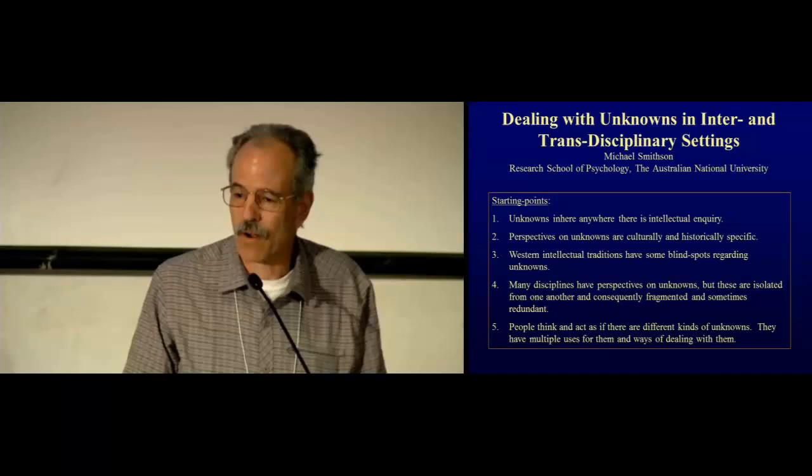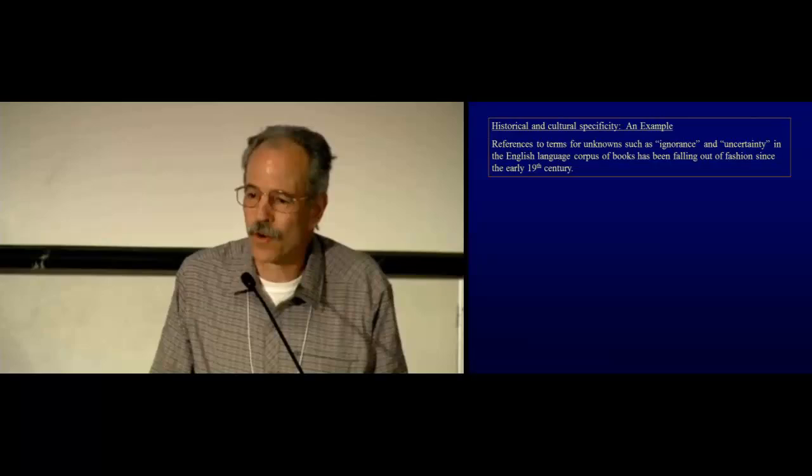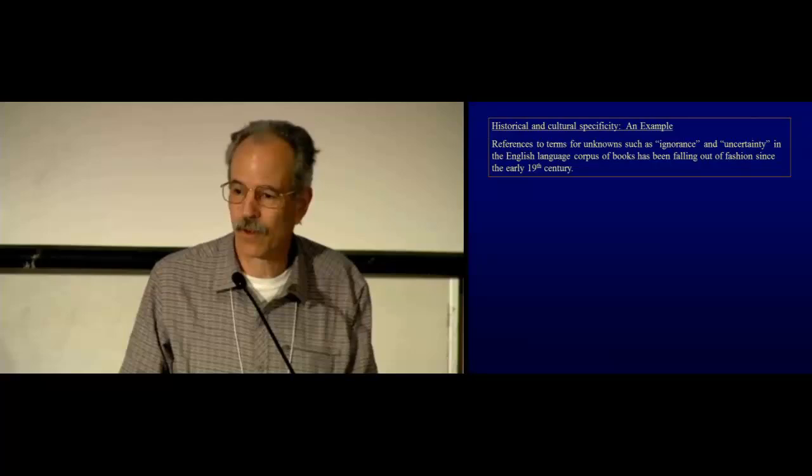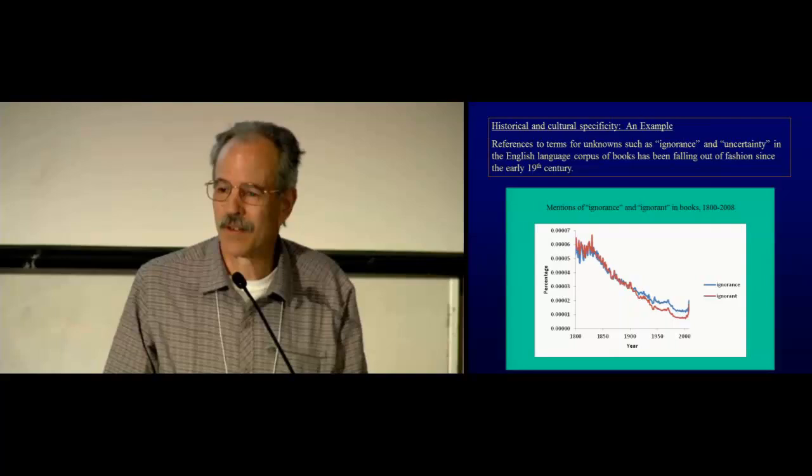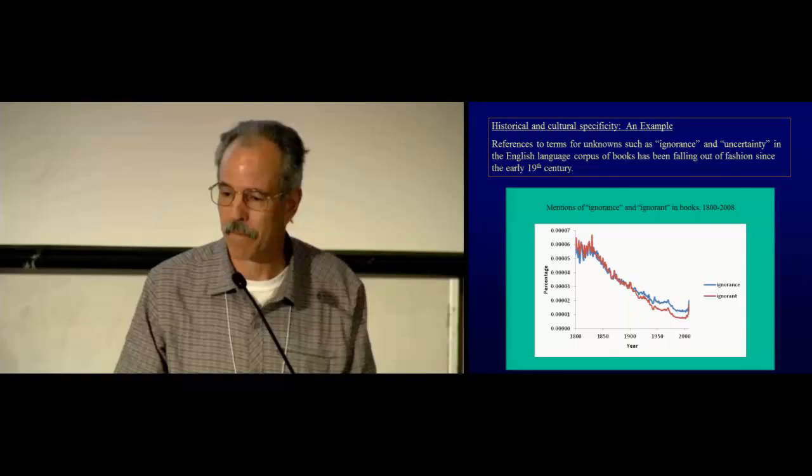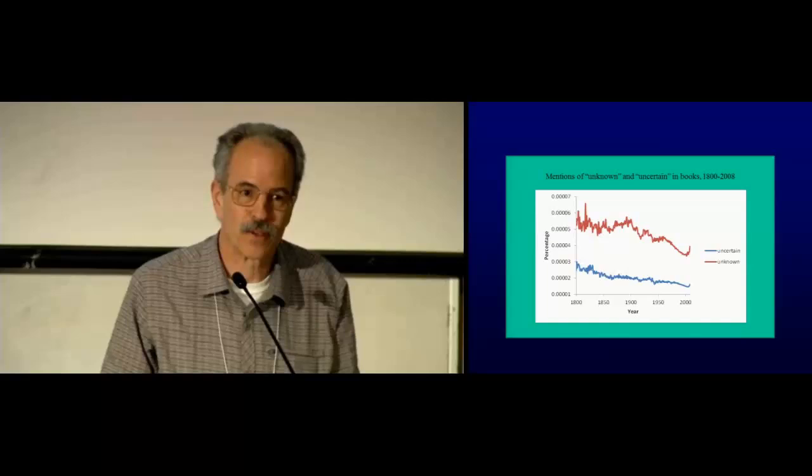Okay, so let's unpack these points a bit. Let's start off with perspectives on unknowns that are culturally and historically specific. And I'll give you just a glimpse of the history of a few terms in the English language corpus of books via Google's Ngram program. Okay, it turns out that terms for unknowns like ignorance, uncertainty, unknown, and so forth, are actually falling out of fashion. Here's the percentage of mentions of terms ignorant and ignorance in books over two centuries. This is not a smooth graph. I set the smoothing parameter to zero. This is the raw data. So this is a very, very definite decline. There's a little bit of an upturn as we move into the 21st century. So there may be hope to rescue these terms yet. Same kind of pattern for terms like unknown, uncertain, all that sort of thing, doubt, whatnot. Same downward trend.